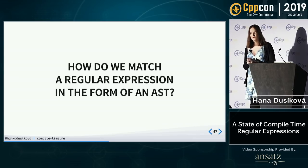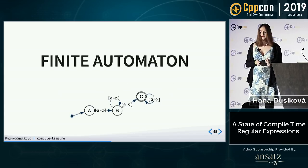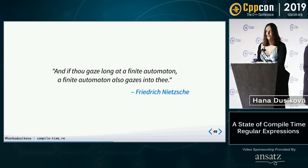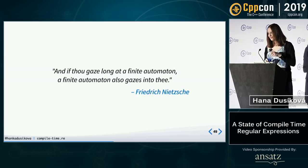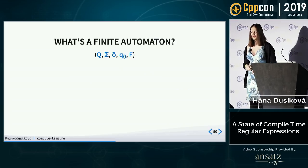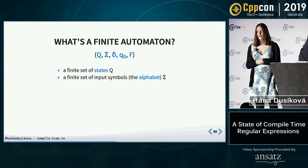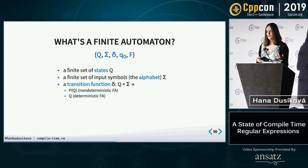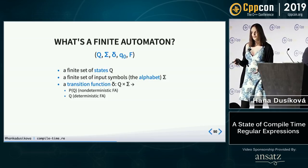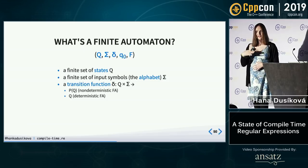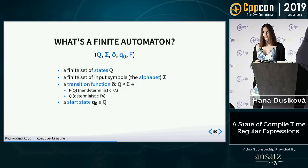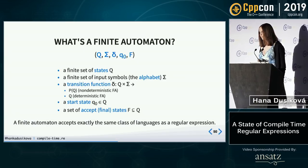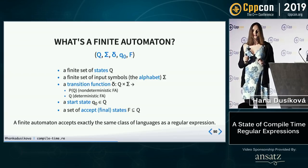How do we match a regular expression in the form of an AST? Before we start, we need to talk about finite automatons. A finite automaton is a five-tuple: a finite set of states, a finite set of input symbols (the alphabet), a transition function from states and alphabet into a set of states or a single state depending on whether it's non-deterministic or deterministic, a start state which is part of the state set, and also a set of accept or final states.